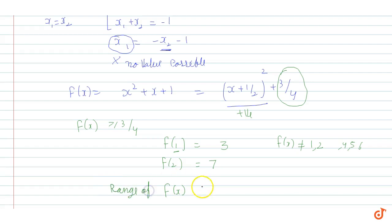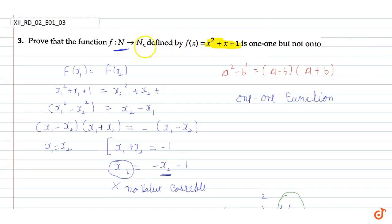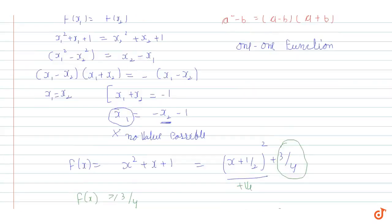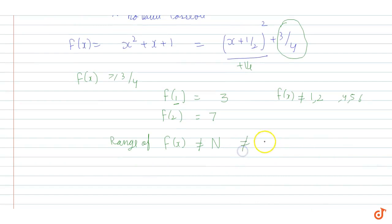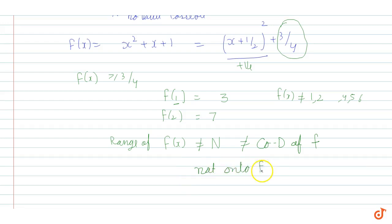Therefore, the range of f(x) is not equal to the set of natural numbers, which is the codomain. Since range ≠ codomain, the function is not onto. For any function to be onto, its range must equal its codomain, and that condition is not satisfied here.